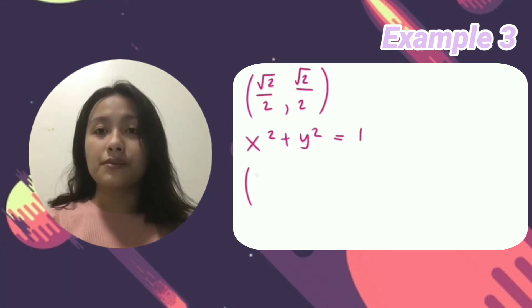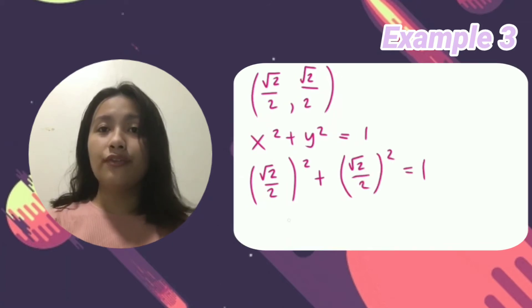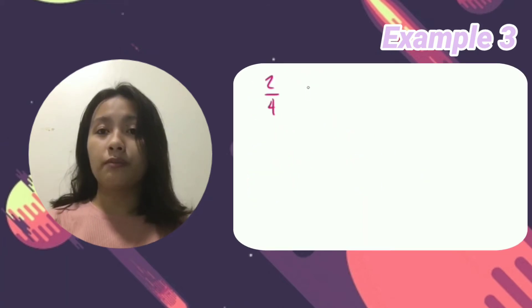So it becomes (√2/2)² + (√2/2)² = 2/4 + 2/4 = 4/4. And if we simplify it, it will become 1.